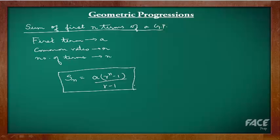A special case of the above sum is when R is smaller than 1. That is, geometric series is decreasing and when it extends to infinity. In this case, n is equal to infinity. Hence, S of infinity is equal to A into R power n minus 1 divided by R minus 1.